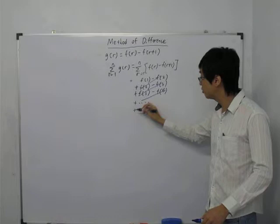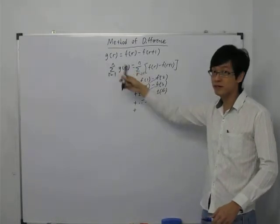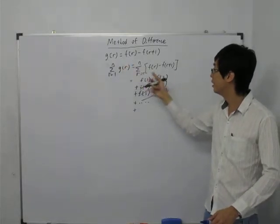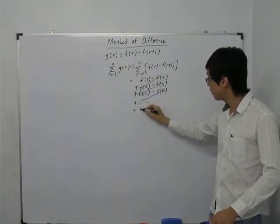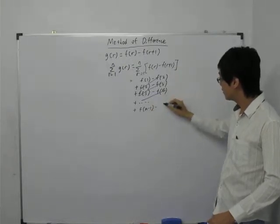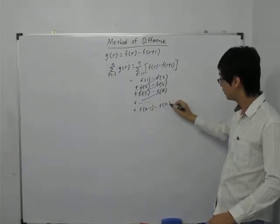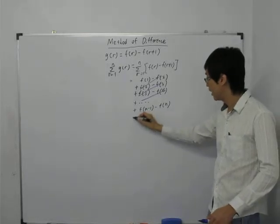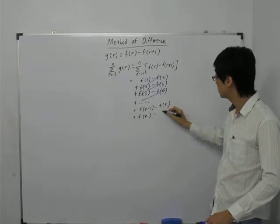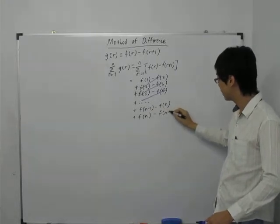And so the second last row, what is the term before n? It's n minus 1. Right? The one before n is n minus 1. I put n minus 1, I will get f(n-1). I put n minus 1, I will get f(n). And the last term will be, I put n, I will get f(n) minus f(n+1).